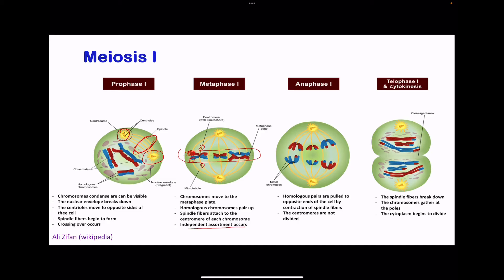During anaphase I, the homologous pairs are pulled to opposite ends of the cell due to contraction of the spindle fibers. The centromere does not divide because the sister chromatids are not separated during anaphase I — it is just the homologous pairs that are pulled apart. Moving on to telophase I and cytokinesis: the spindle fibers break down, the chromosomes gather at opposite poles, and the cytoplasm begins and then fully divides.